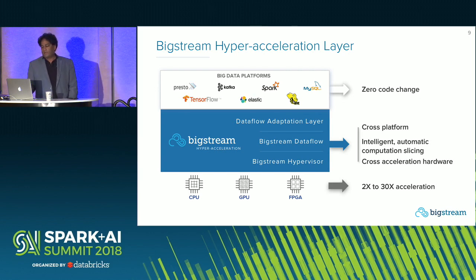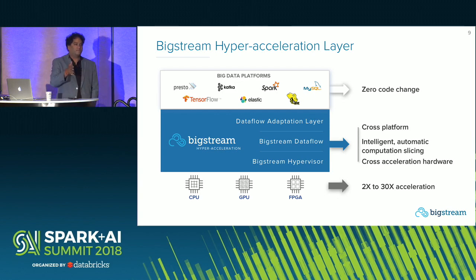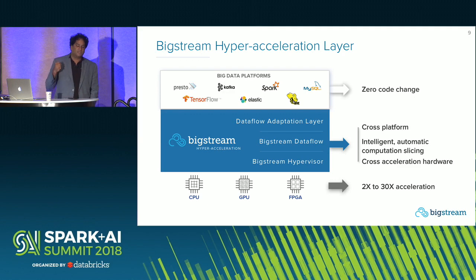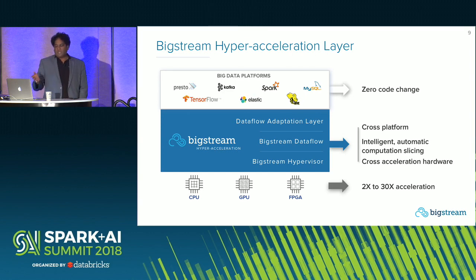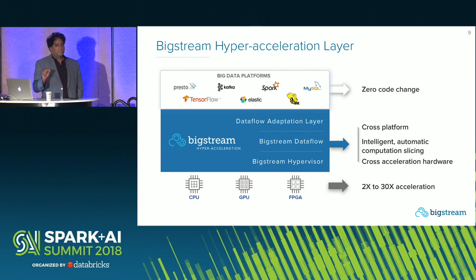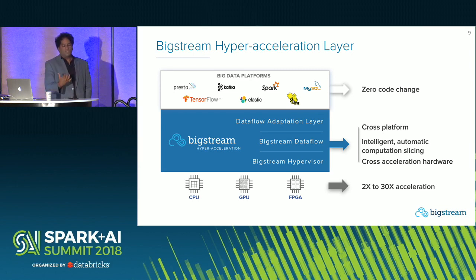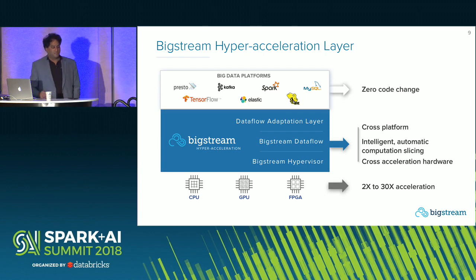There's a lot that goes into making this cross-platform and cross-acceleration hardware. We have algorithms to slice and dice your computation across a heterogeneous environment. You want to think about this as a framework — we're taking application-level semantics expressed by the programmer and bringing them down to hardware automatically. This can apply also to intelligent storage, intelligent networking cards, anything where application-level semantics can help with performance at the hardware level.